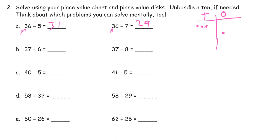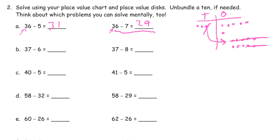Let's see what happens if we do 36 minus 7 on our chart. There's the 30, and there's 6 ones. Now we can't cross out 7 here, so we have to unbundle the 10 — we get 10 ones. We're going to subtract 7, so from this little 10-frame, we're going to have 3 left. 2 tens left, and 9 ones — 29 left.